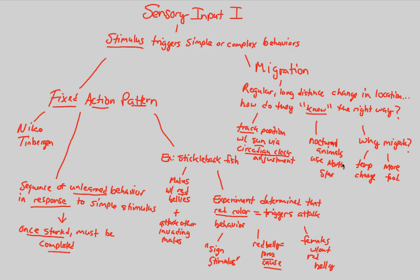So that covers sensory input one. We'll look at some more sensory input a little bit later. Just understand we're always looking for the stimulus and what does that stimulus do? How does it relate to the behavior that we see? We see it in a fixed action pattern and we see it in migration so far.